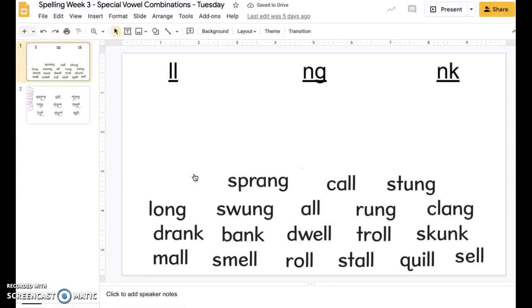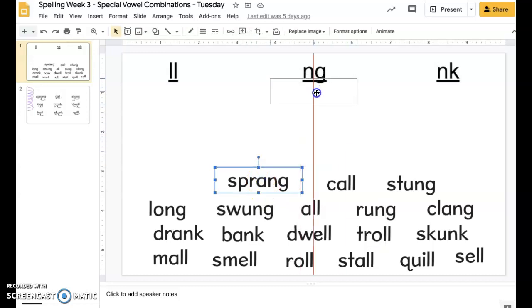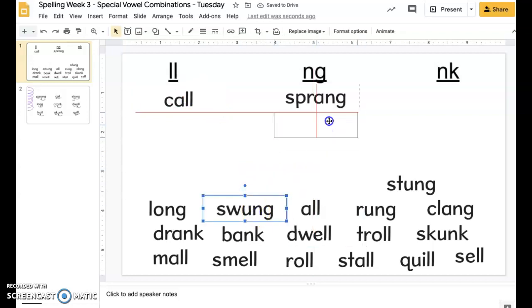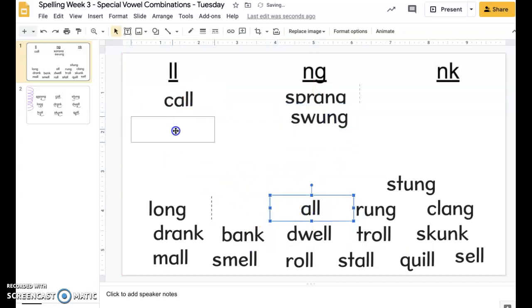And so you have two screens that you're working on this week. One, you're going to sort the words. The next one, you're going to find the ones that are marked correctly. So, sprang ends with the N-G special vowel combination, so it will go under N-G. Call ends with L-L. So, you'll just continue to sort these words where they go.